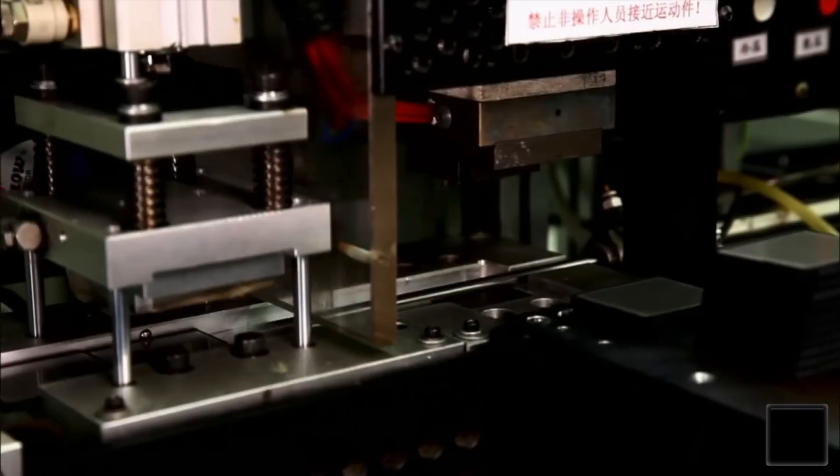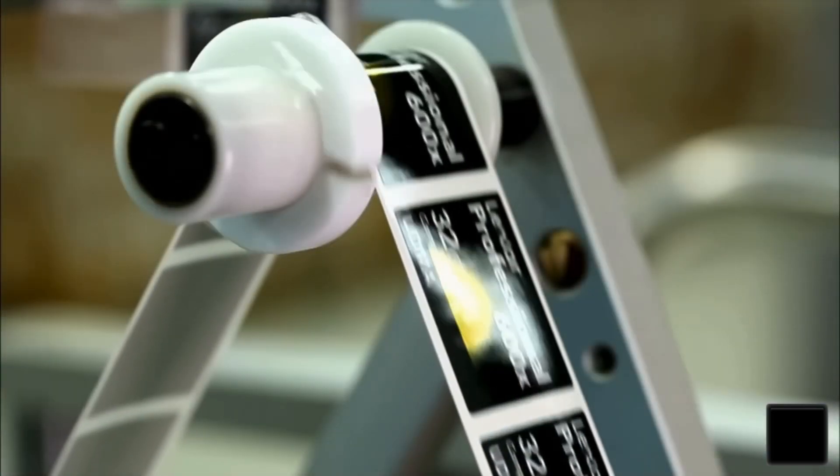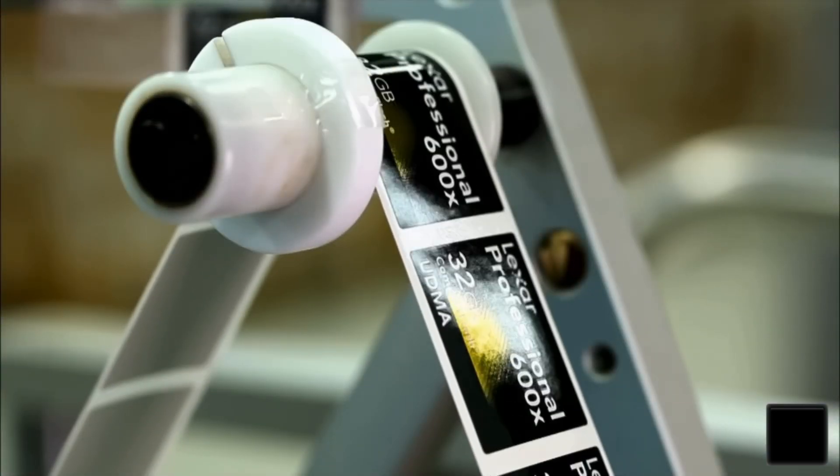A small automated press locks the two halves of the housing together. The next station labels the front of the housing.